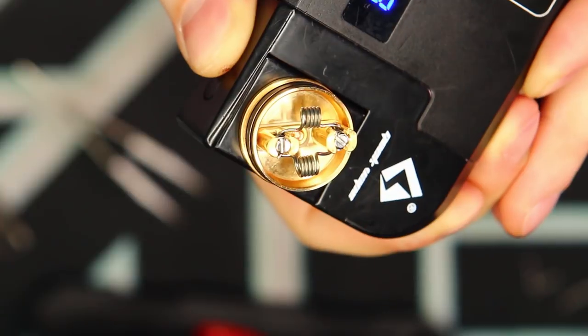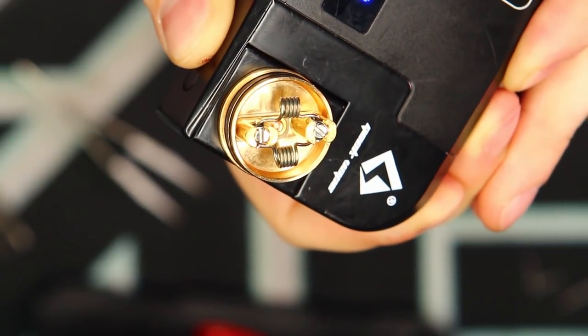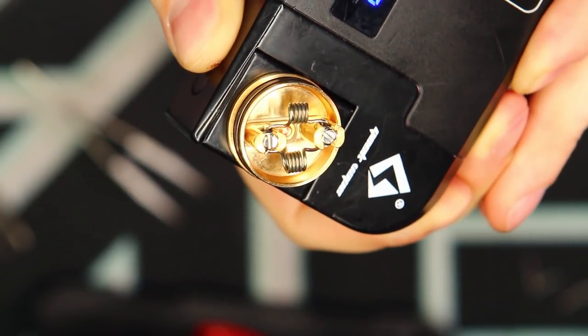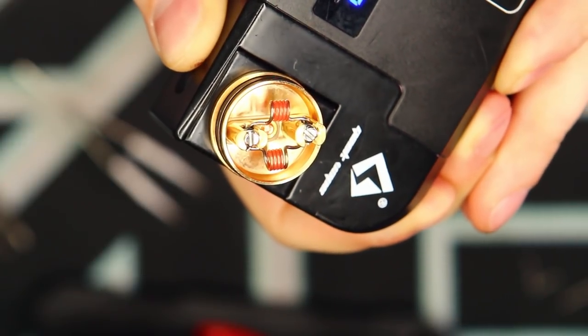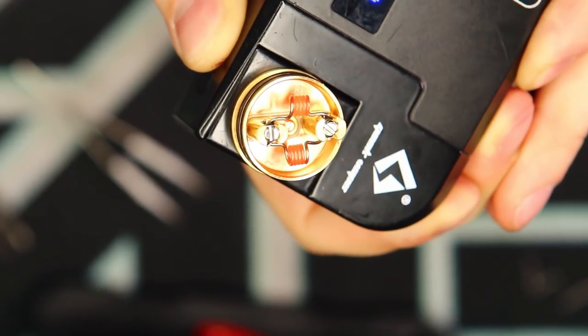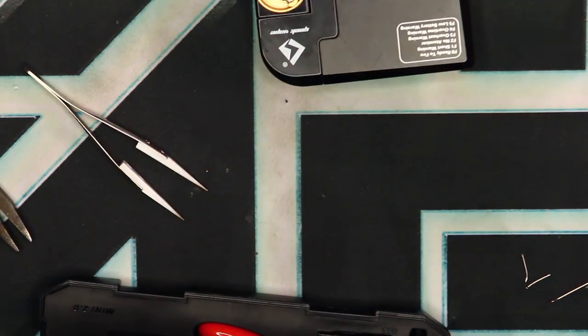All right, guys. I'll give you a quick little glow shot here for these coils. Just so you can see they're lighting up nice and evenly. Very slow ramp up time on this ohm reader, though. There we go. Nice little glowing coils there. Everything looks good to me. So let's go ahead and wick it.